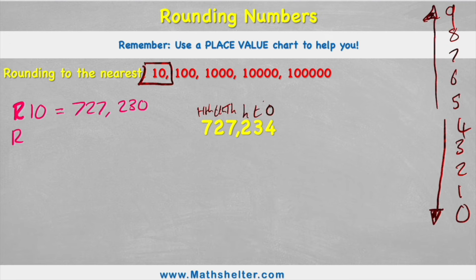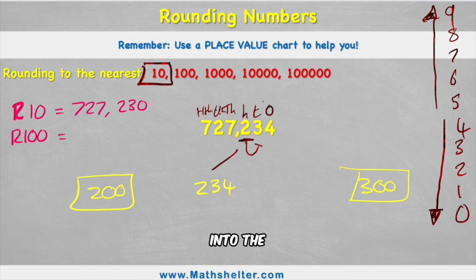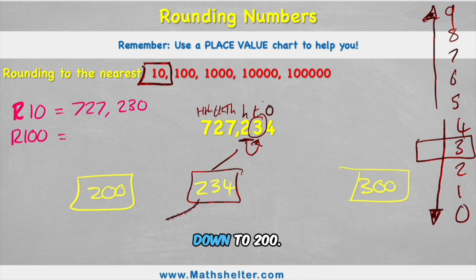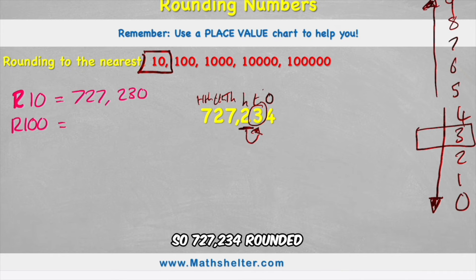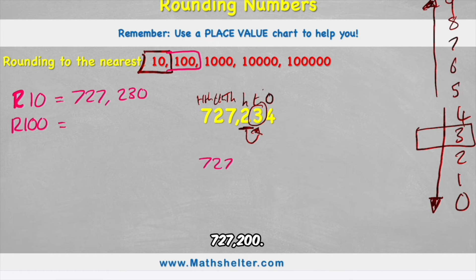Now let's round to the nearest 100. So using the same logic I'm going to look in my hundreds column and I can see I have a 2 and my whole group of hundreds is 234. So 234 sits between 200 and 300. So I'm either going to be rounding 234 up to 300 or down to 200. So remember what do we do to help us? We're going to look next door in this case into the tens column and I can see I have a 3. 3 is also part of my down so therefore I'm going to be rounding 234 down to 200. So 727,234 rounded to the nearest 100 becomes 727,200.